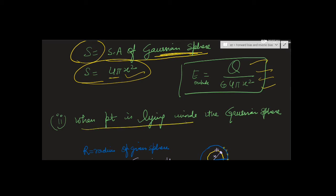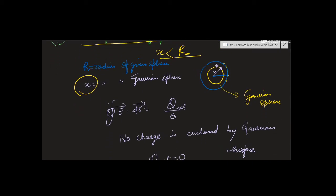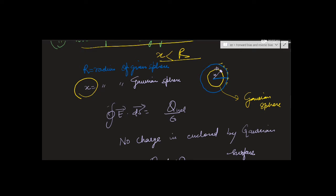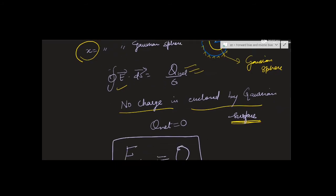For the second case, the point lies inside the Gaussian sphere, so the Gaussian sphere is inside the given sphere and its radius is less than R. Since charge is sprinkled only on the given sphere, no charge is enclosed by the Gaussian surface. So q_net = 0, meaning E inside = 0.